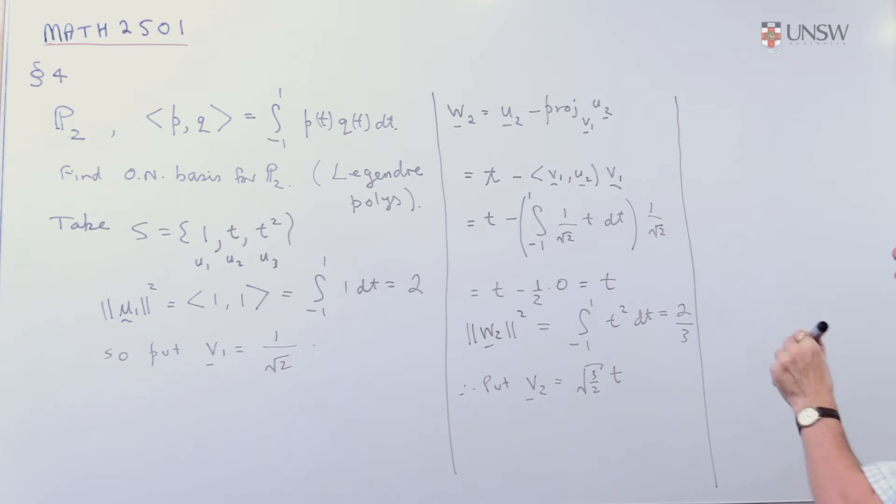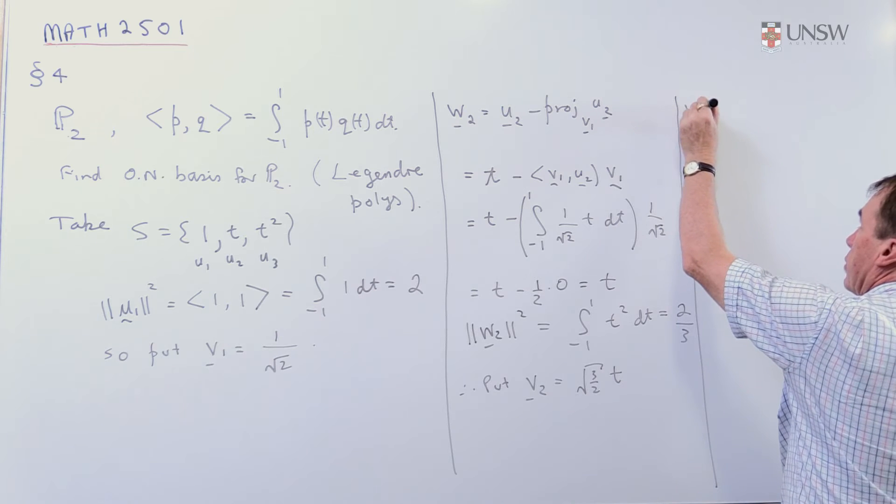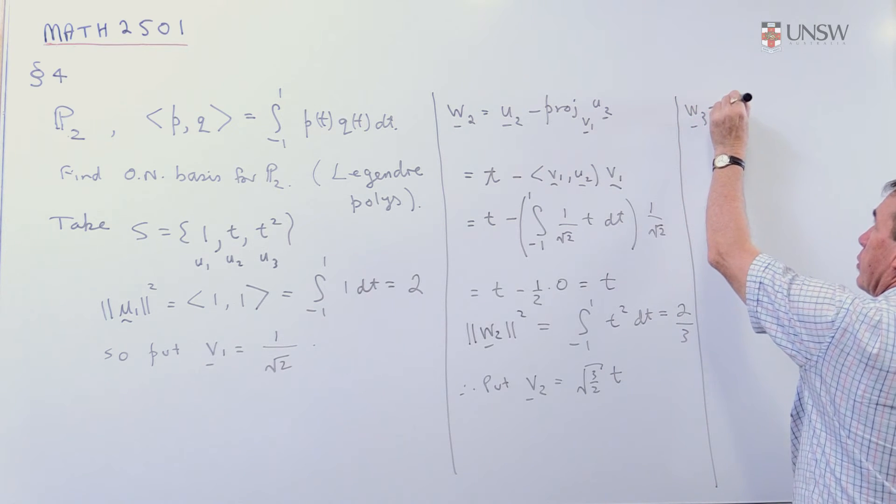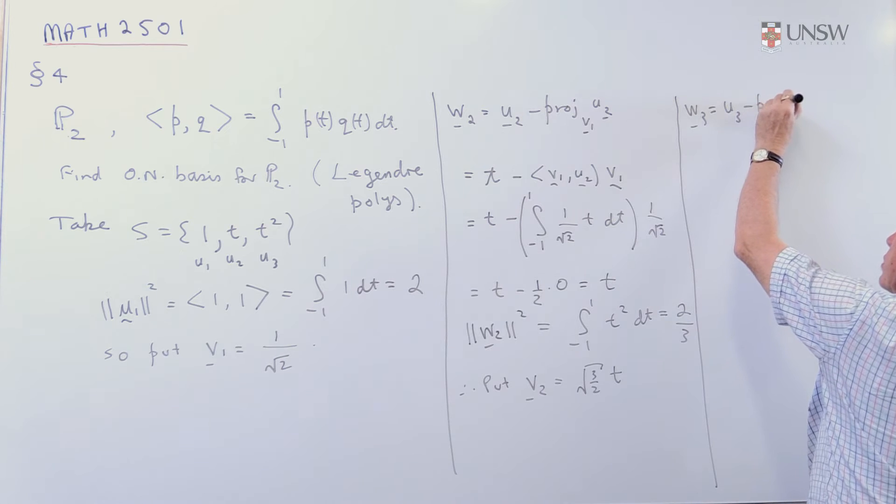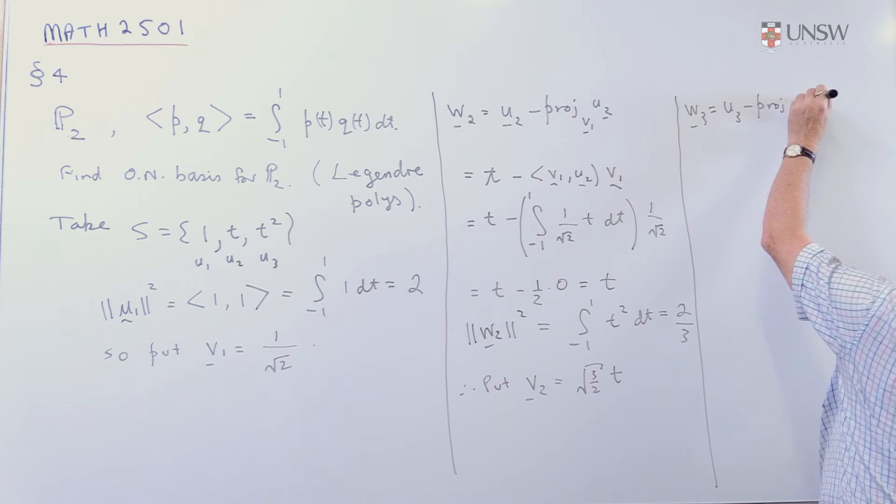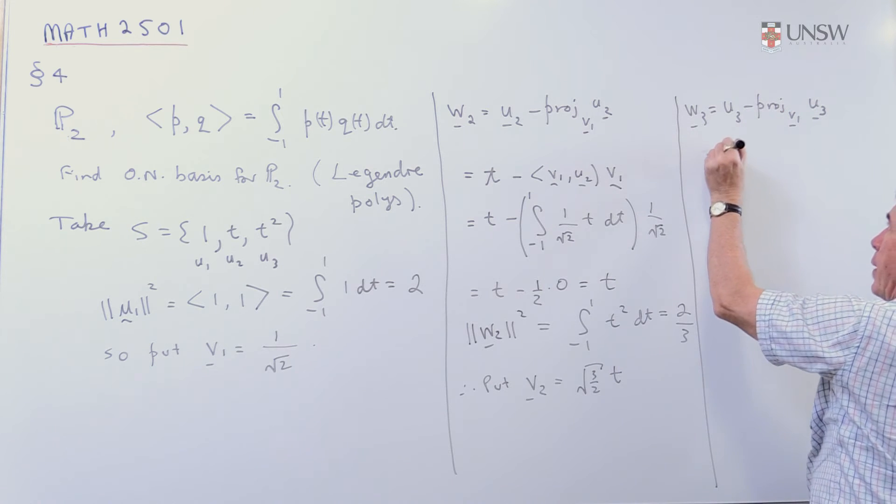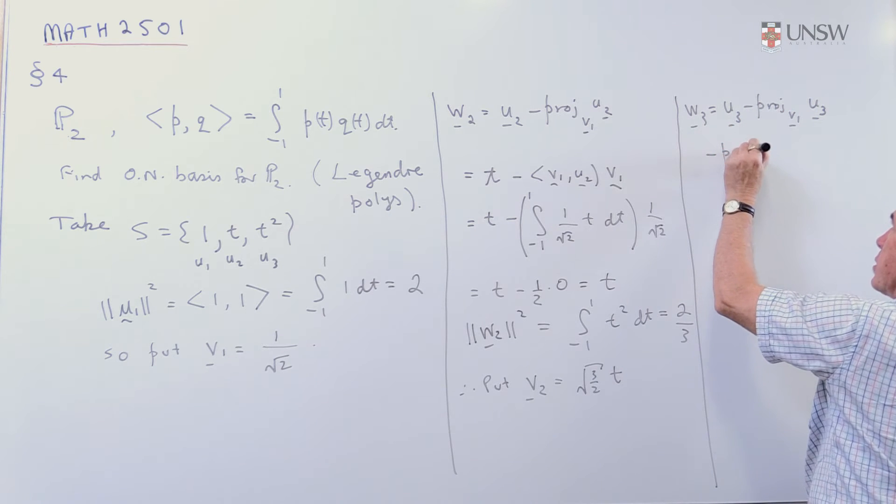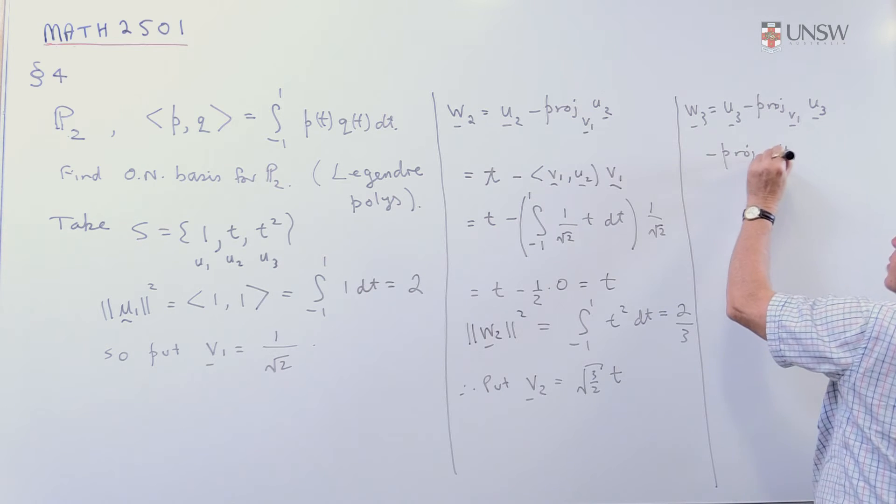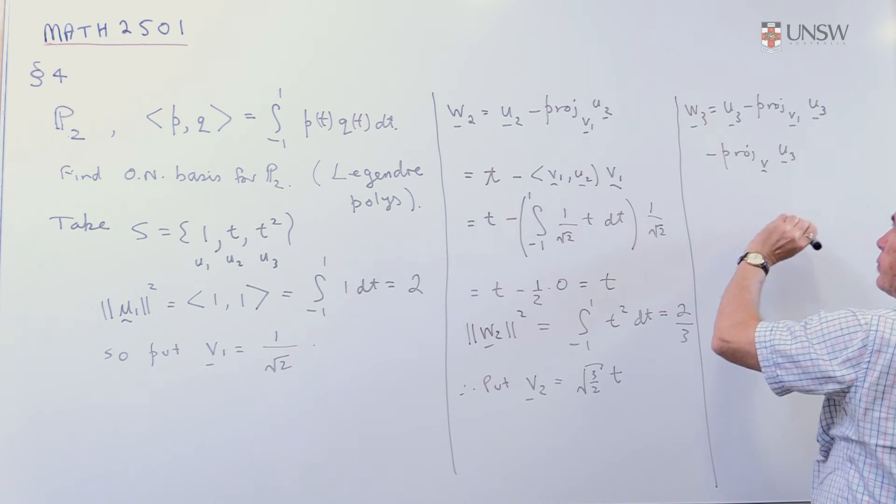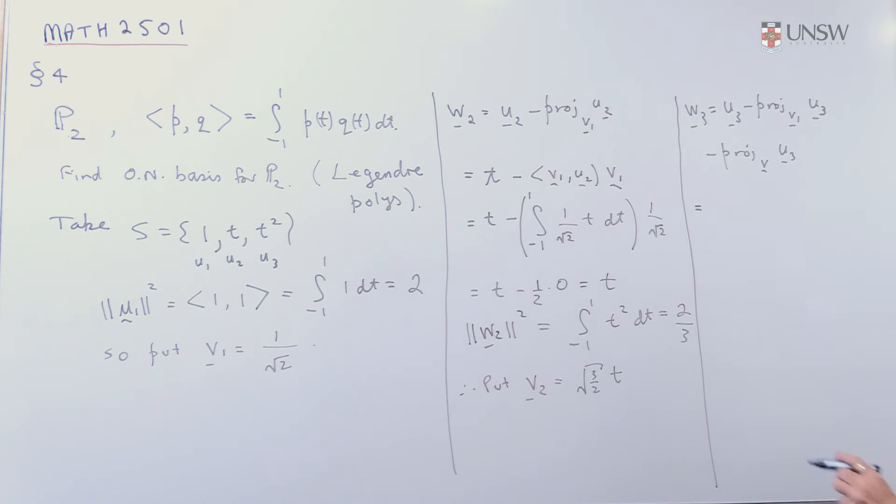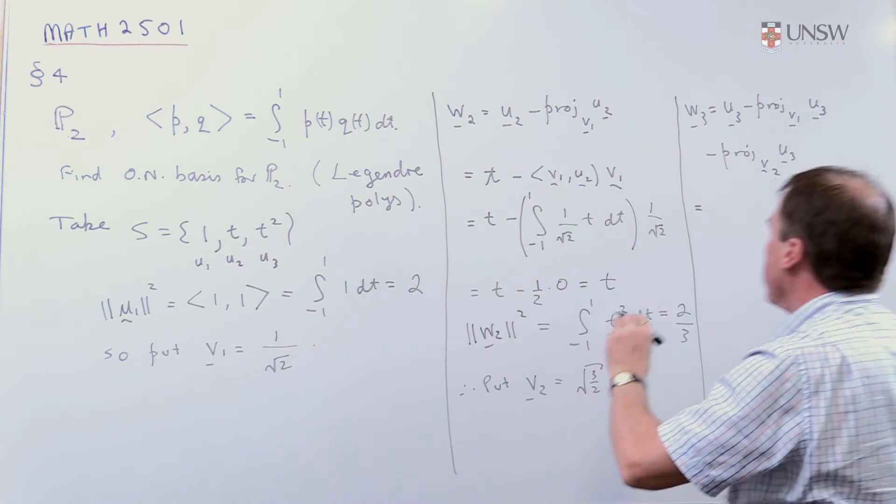Finally, then, we now need to take, I'm going to put W3 is equal to U3 minus the projection of U3 onto V1 and then minus the projection of U3 onto V2. So, now, our U3, we've got to keep track of what's what here, so we've got that vector T squared